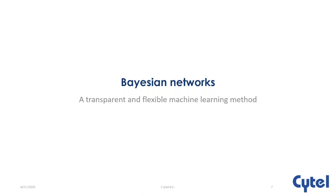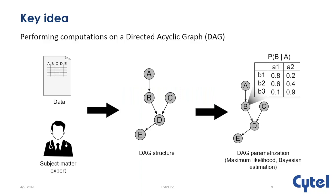What I'm going to present for the rest of the talk is a transparent machine learning method called Bayesian networks, which are also very flexible. The key idea is that we are performing computations on graphs — specifically on a directed acyclic graph, or DAG. Essentially, we start out with some data. Let's say we have five variables, A, B, C, D, and E. We can use optimization techniques and machine learning methods to construct a DAG structure that shows you the relationships between these five variables.